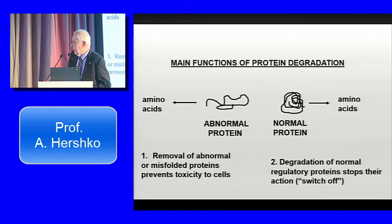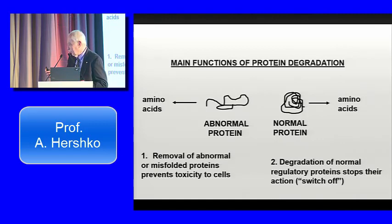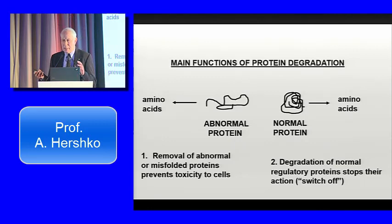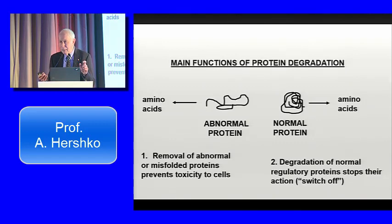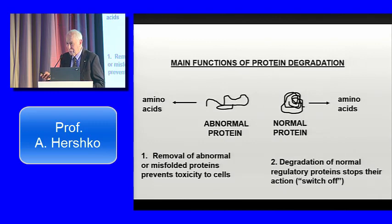The protein degradation system also degrades some normal proteins at certain times — these are regulatory proteins that have to act for a very short window of time. It's like a switch off: the protein function is turned on by synthesis, but it's turned off by destroying these proteins. Let us imagine that the cell is like a big orchestra with thousands of players — the different proteins. There is one player, the trumpet player, that has to play a tune at a certain time. It will play the tune, but then it has to stop. If the trumpet player does not stop, he will ruin the symphony. In the cell, this is achieved by degradation — it destroys the trumpet player, but that is very efficient.